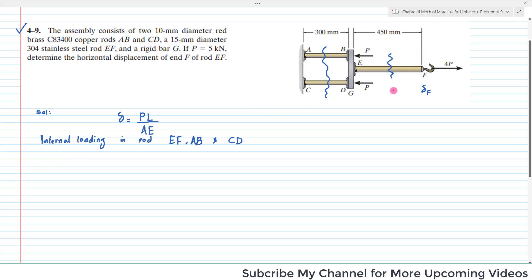I have to section them here and then section there in order to get the internal loading. If I section it here and draw the free body diagram, this is rod EF. This is the force 4P and P is given as 5 kN, so that equals 20 kN. If you cut it from there, there will be a reaction force to balance it. This force will be PEF, which equals 20 kN in opposite direction.